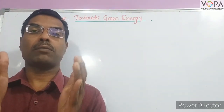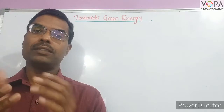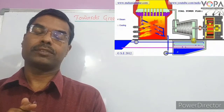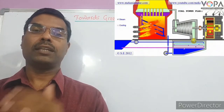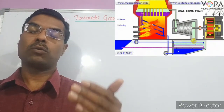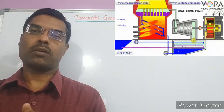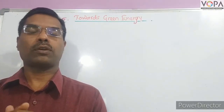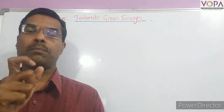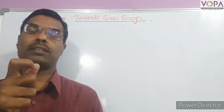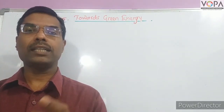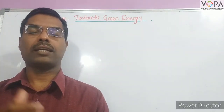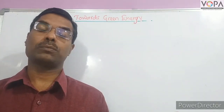In thermal energy power stations, coal is burnt and heat energy is obtained. This heat energy is used to produce steam from water, and with the help of the steam — which carries tremendous energy — kinetic energy is given to the turbine. The turbine is connected to the generator, and in the generator electrical energy is produced.